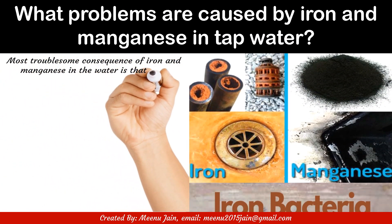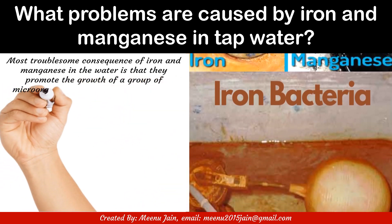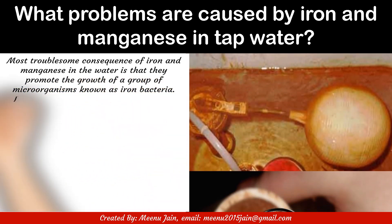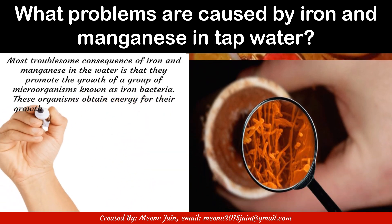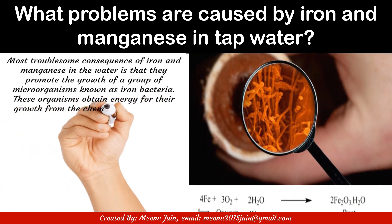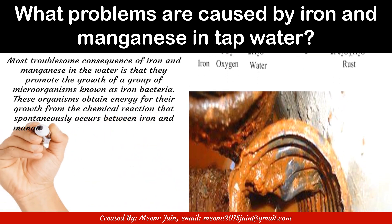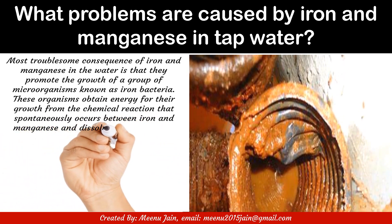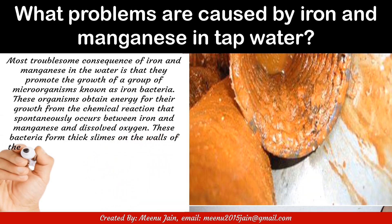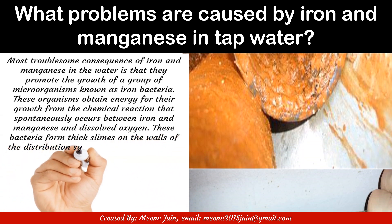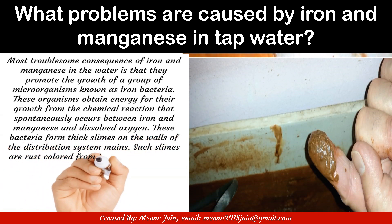The most troublesome consequence of iron and manganese in water is that they promote the growth of a group of microorganisms known as iron bacteria. These organisms obtain energy for their growth from the chemical reaction that spontaneously occurs between iron and manganese and dissolved oxygen.